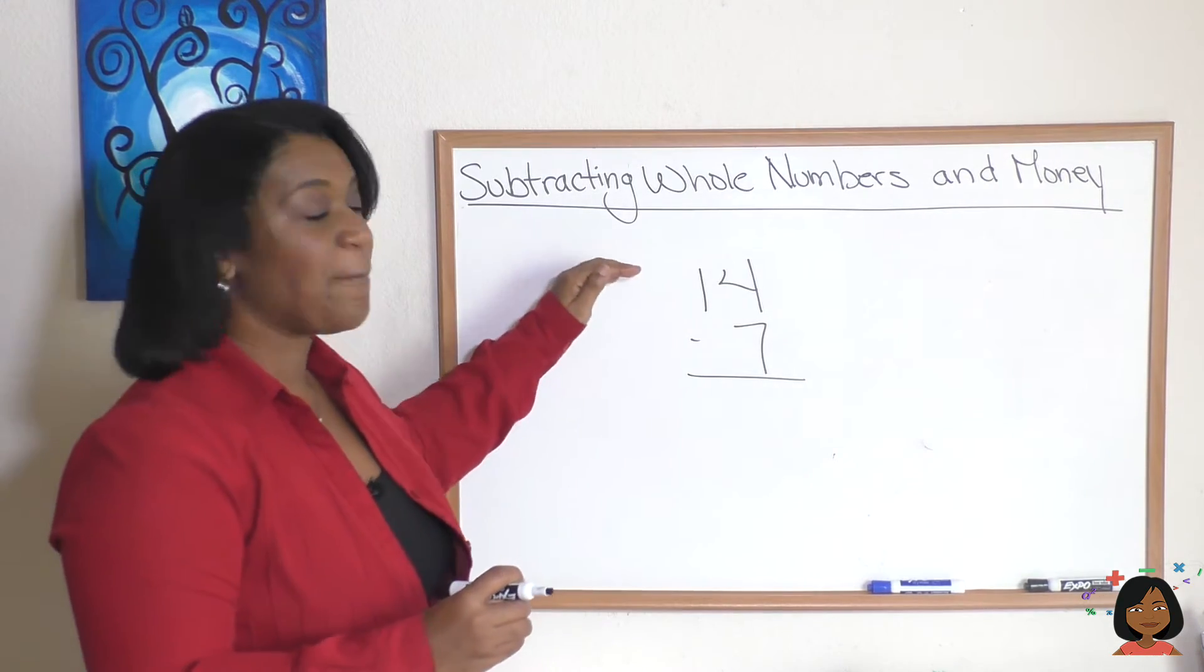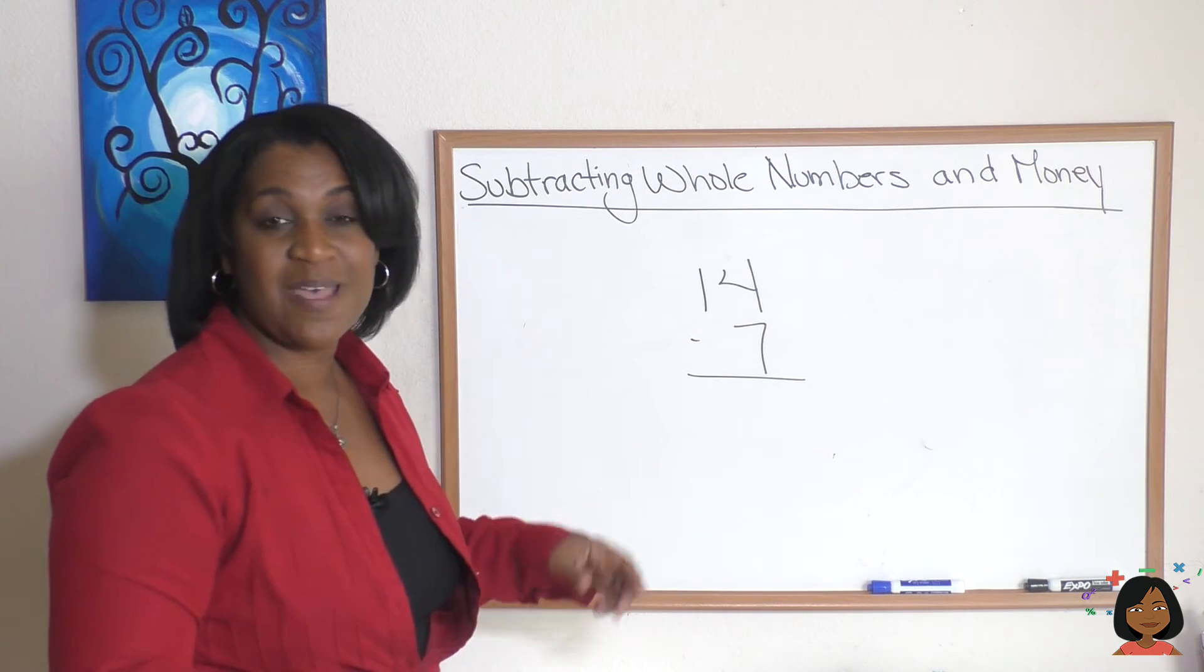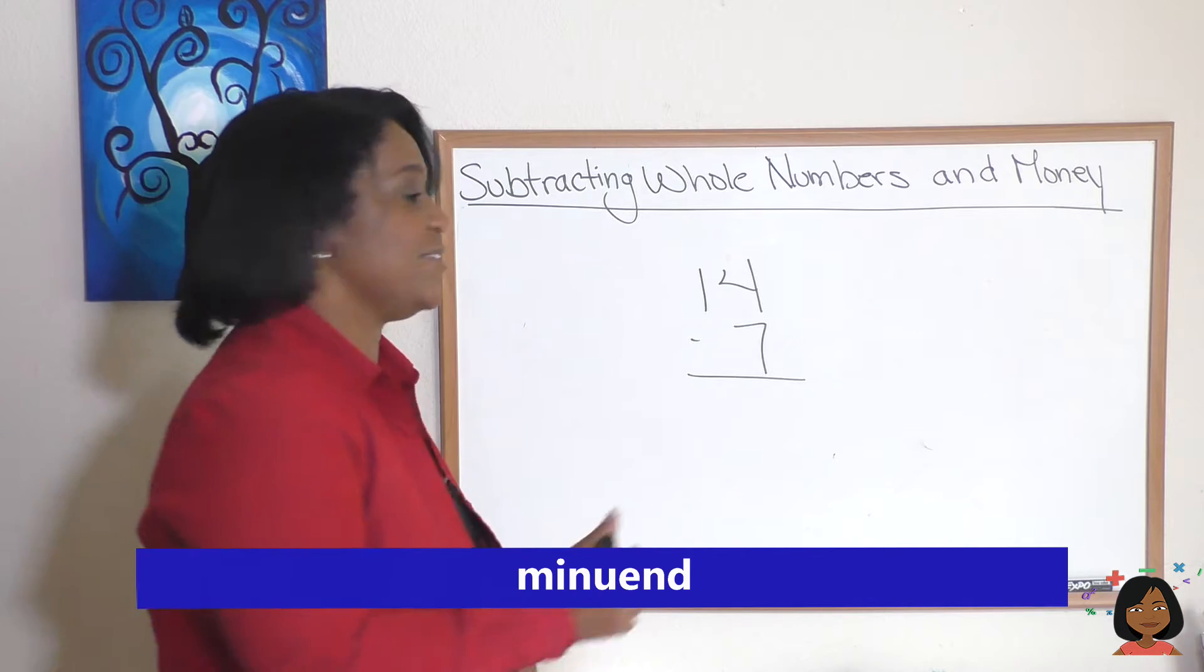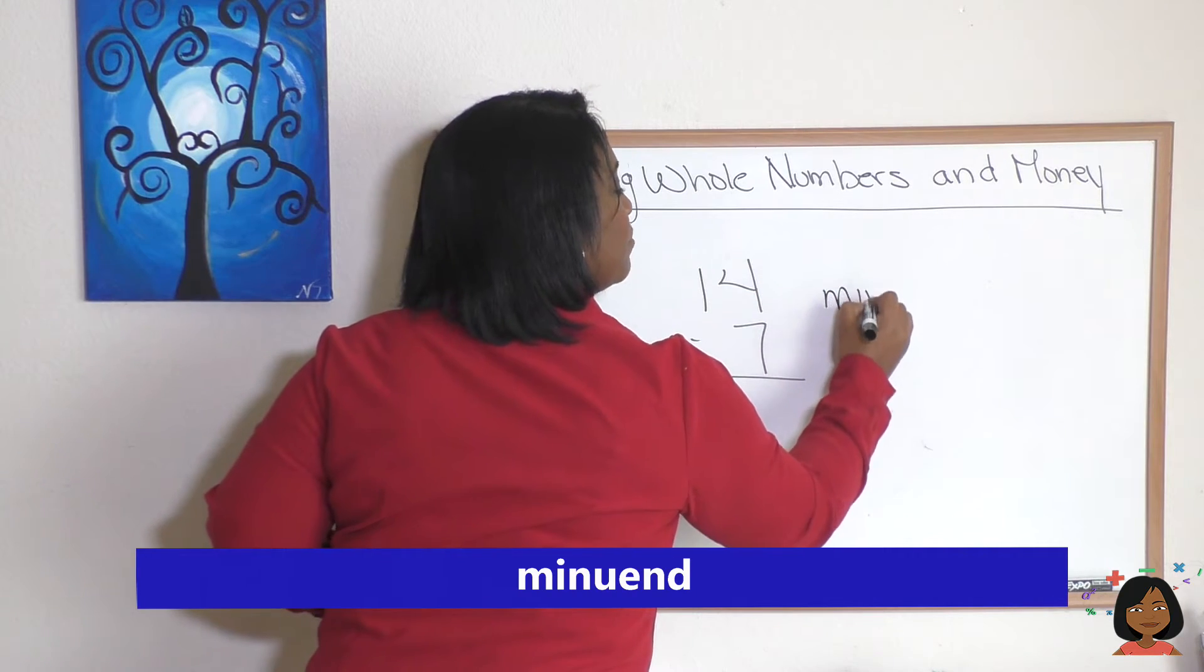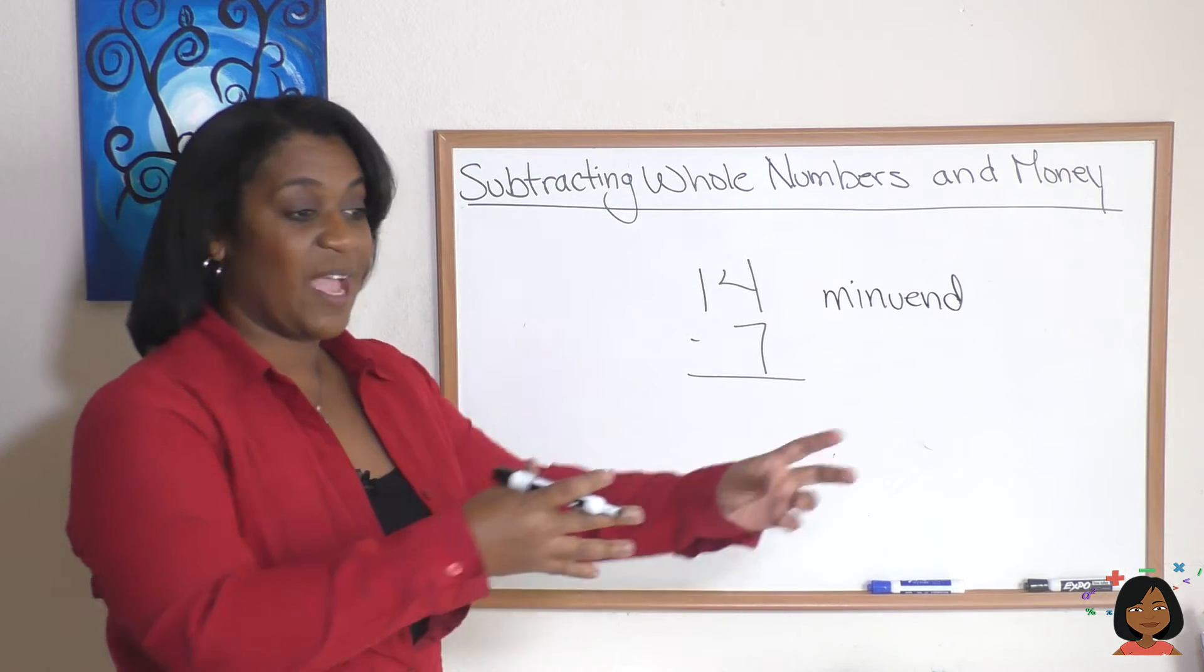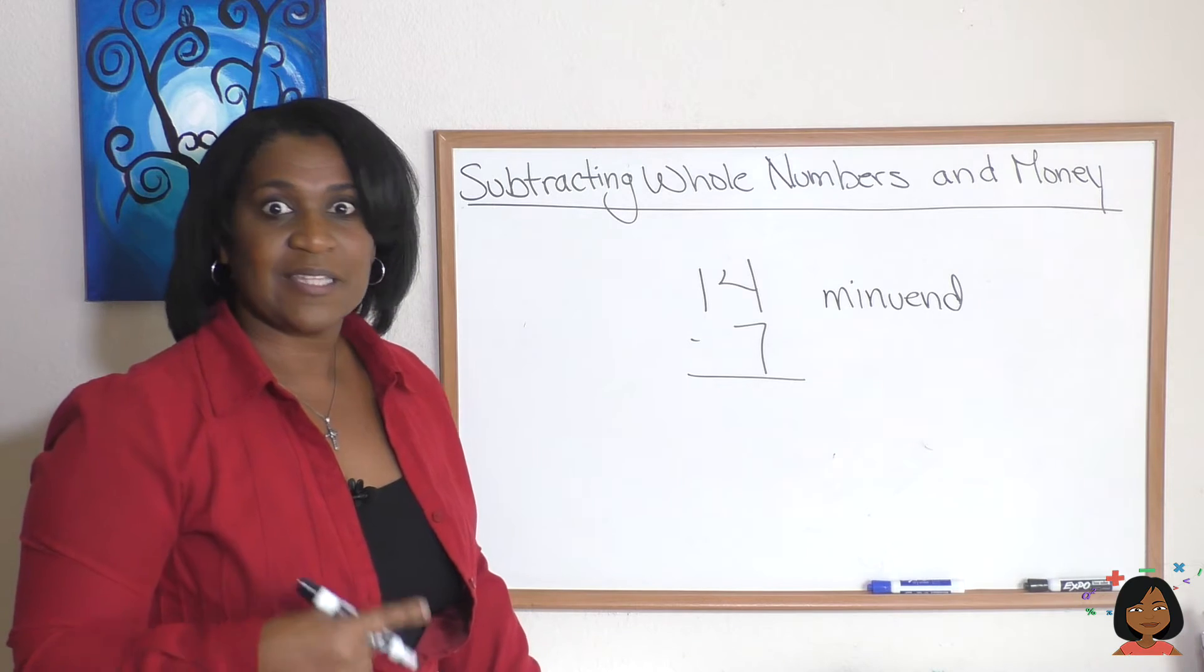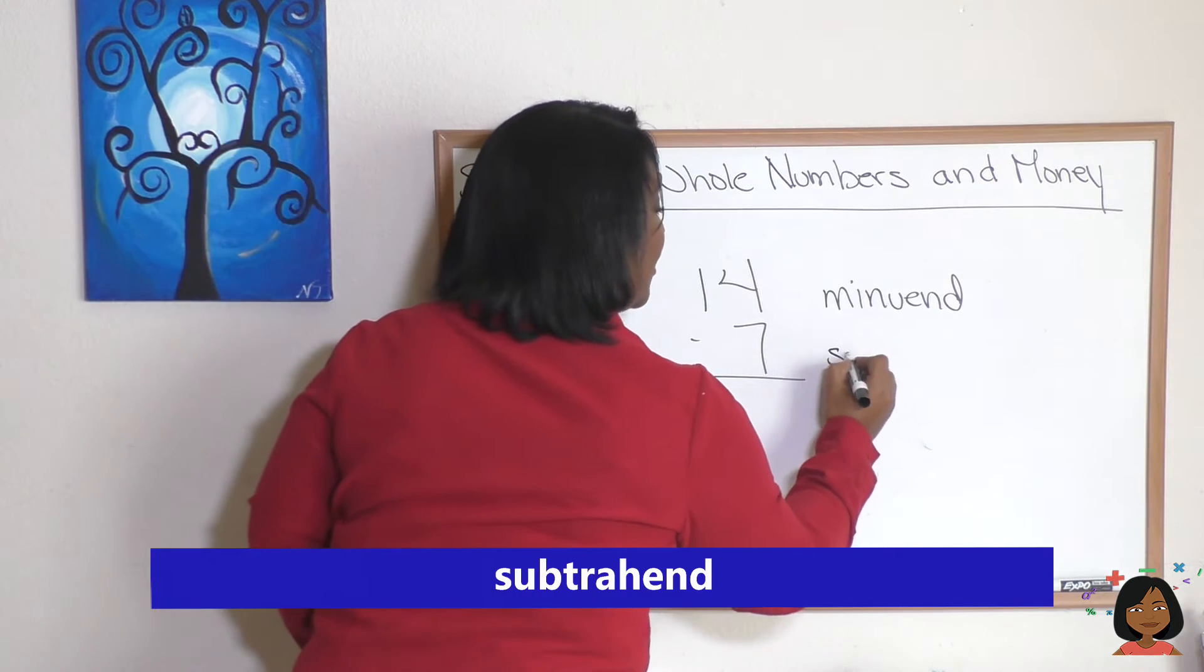The top number, the number that we are going to be doing the subtracting from, is called the minuend. The bottom number, the amount that we are subtracting from the minuend, is called the subtrahend.